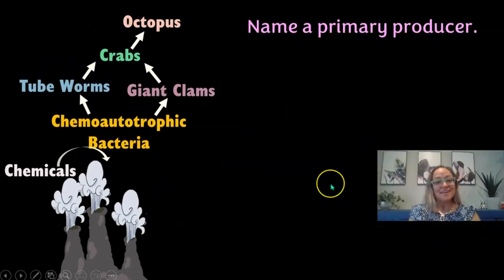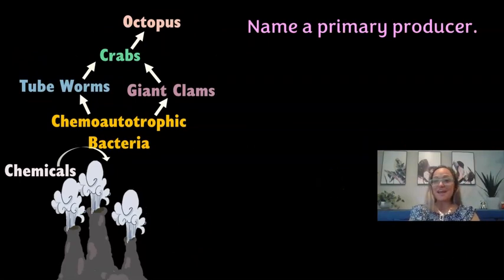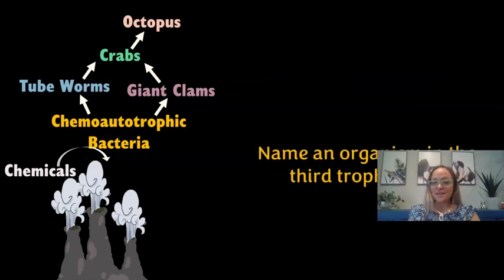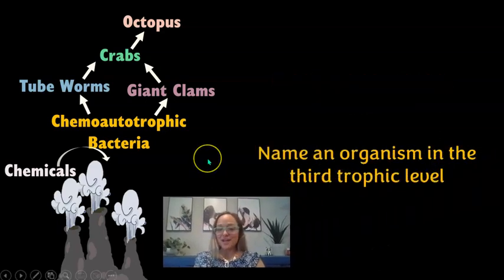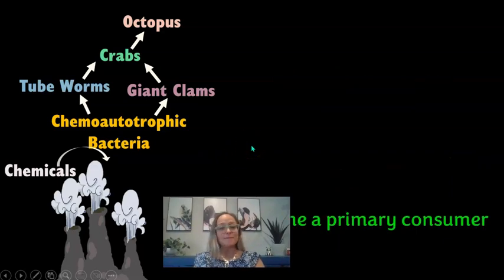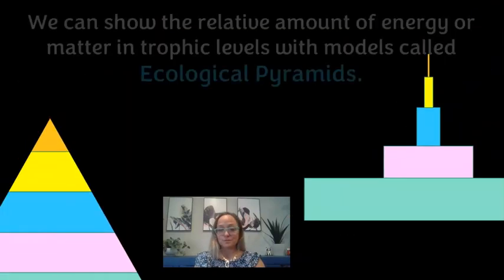A second example is a food web from hydrothermal vents. In this one the primary producer is the bacteria. A secondary consumer would be the crabs that eat the worms or the giant clams. An organism in the third trophic level is those crabs, and a primary consumer would be the giant clams or the tube worms.